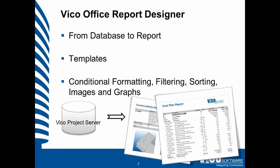The functions we will be using today include conditional formatting — everything on a certain level of your cost plan can be formatted to be recognizable. In the example here, everything at uniform level 1 is in Arial, size 0.16, and in bold. Filtering allows you to see only the resources in your cost plan, or only the material resources. Sorting speaks for itself. And then images and graphs — the report designer has a huge collection of graphic designs, so visual representation of your data in the report templates is possible.